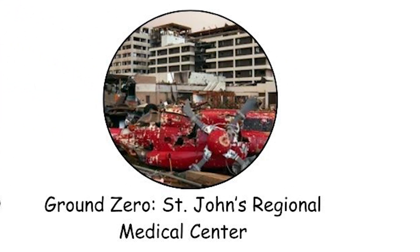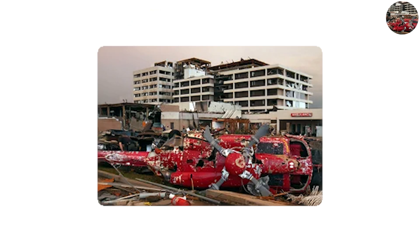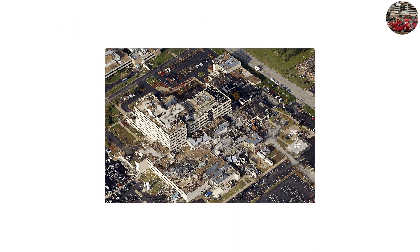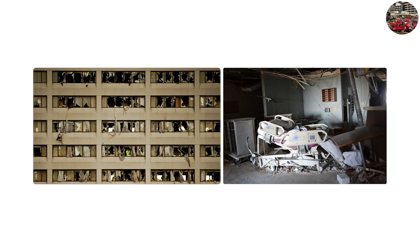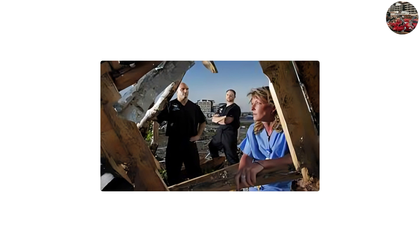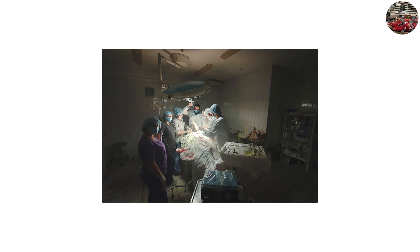Ground Zero – St. John's Regional Medical Center. One of the most haunting images of the Joplin tornado was the direct hit on St. John's Regional Medical Center, a major hospital serving the region. The massive building was pushed several inches off its foundation. Windows blew out, medical equipment was destroyed, and patients had to be evacuated in the middle of the storm — some on foot, some carried by emergency responders who braved the raging wind and debris. First responders described walking into the ER entrance and finding nothing recognizable.